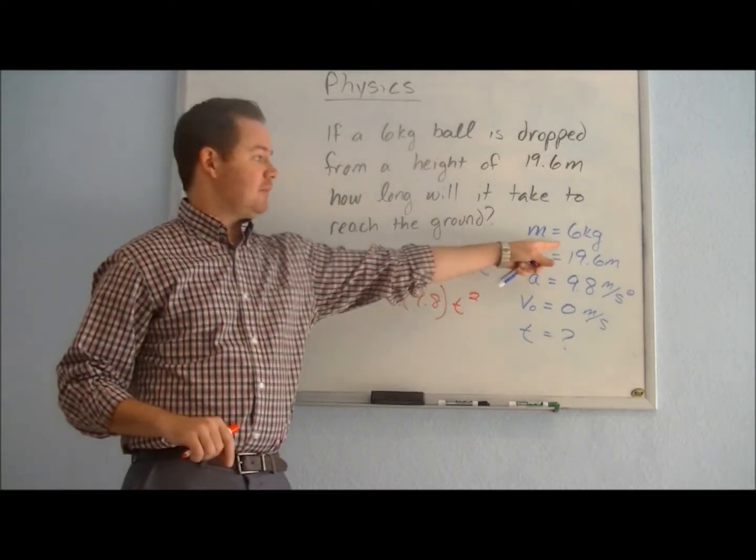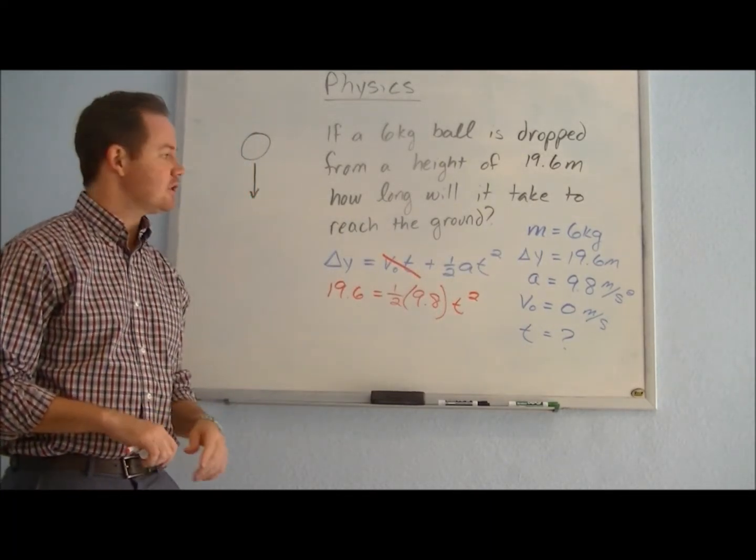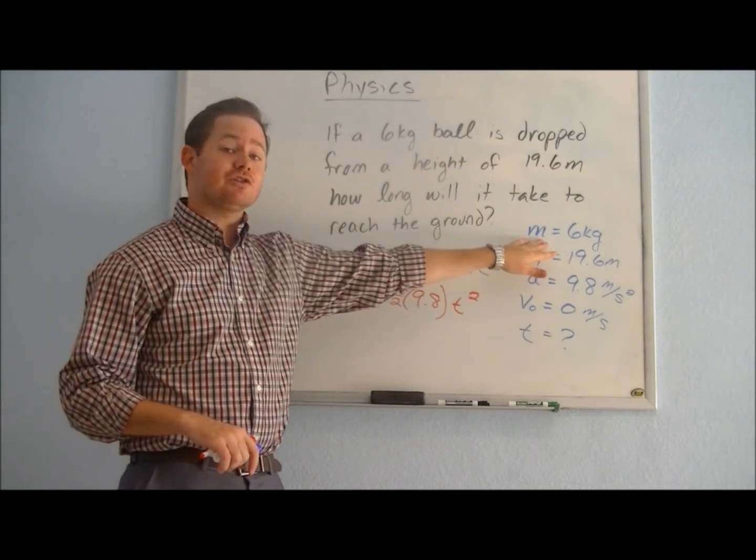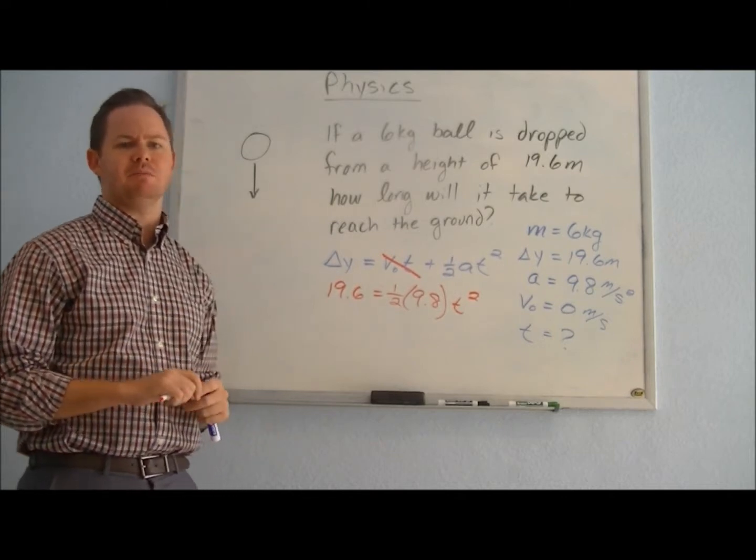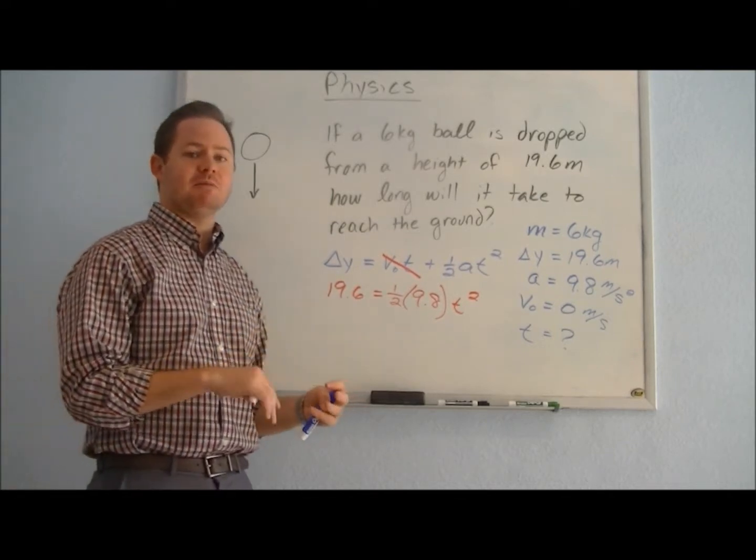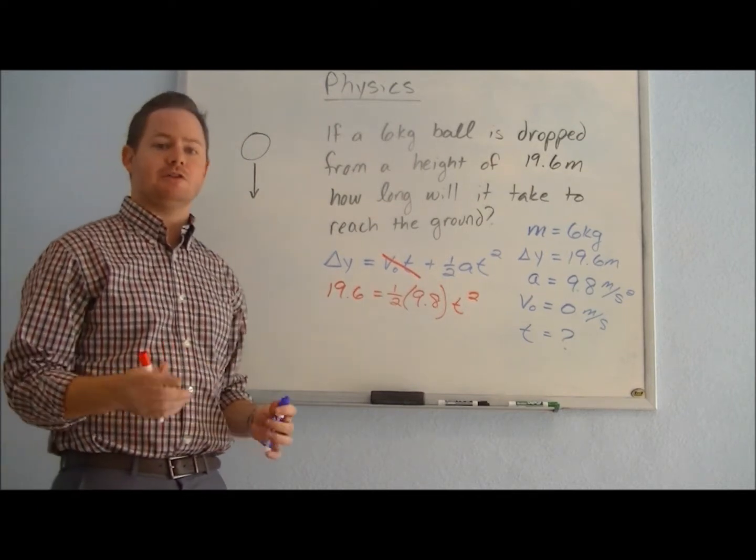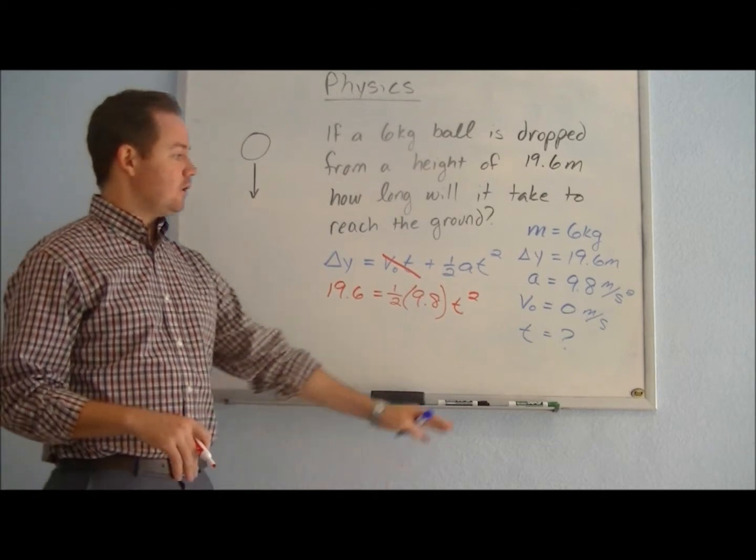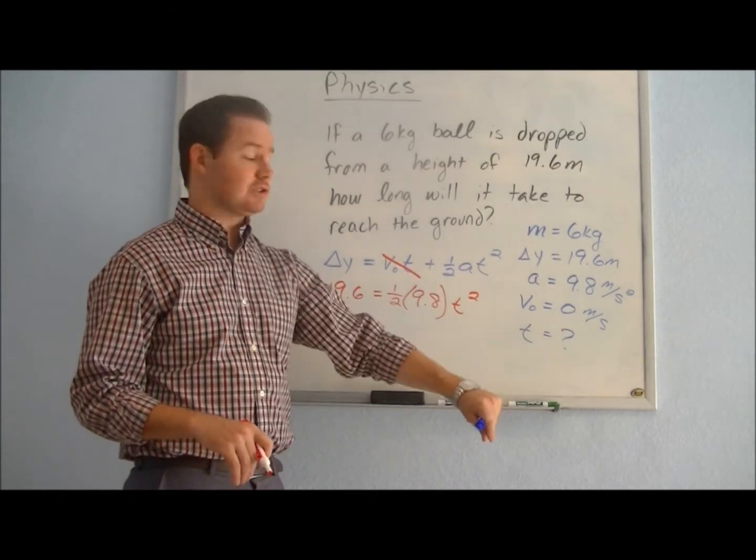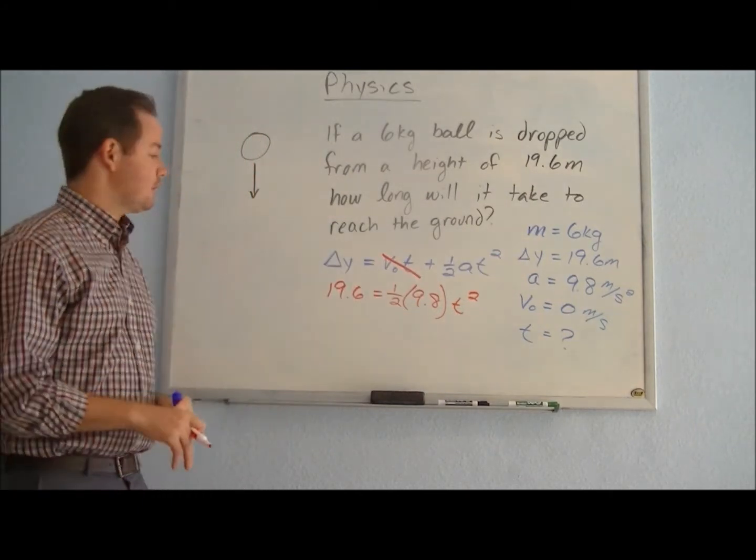The reason I pointed out that the mass is six kilograms is because a lot of times in challenging physics questions, you will be given an extra value that you don't actually need in order to solve the question. And it sometimes can be misleading. It can cause us to maybe use the wrong equation. So that's why it's important not just to memorize the equations, but to really understand how to use those equations so that we know which variables are helpful to solving for what we need to find and which variables don't really help us get to where we're going.